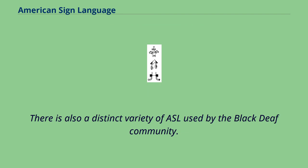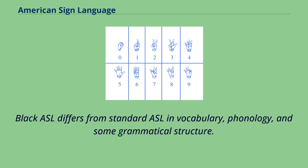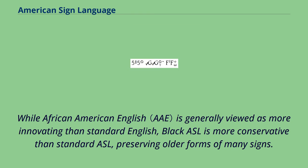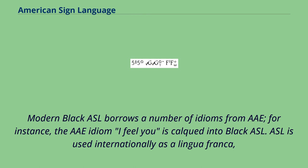There is also a distinct variety of ASL used by the Black Deaf community. Black ASL evolved as a result of racially segregated schools in some states, which included the residential schools for the deaf. Black ASL differs from standard ASL in vocabulary, phonology, and some grammatical structure. While African American English is generally viewed as more innovating than standard English, Black ASL is more conservative than standard ASL, preserving older forms of many signs. Black sign language speakers use more two-handed signs, are less likely to show assimilatory lowering of signs produced on the forehead, and use a wider signing space. Modern Black ASL borrows a number of idioms; for instance, the idiom 'I feel you' is calqued into Black ASL.